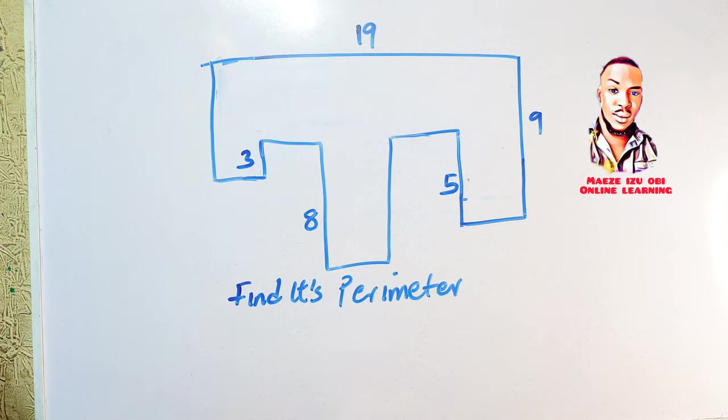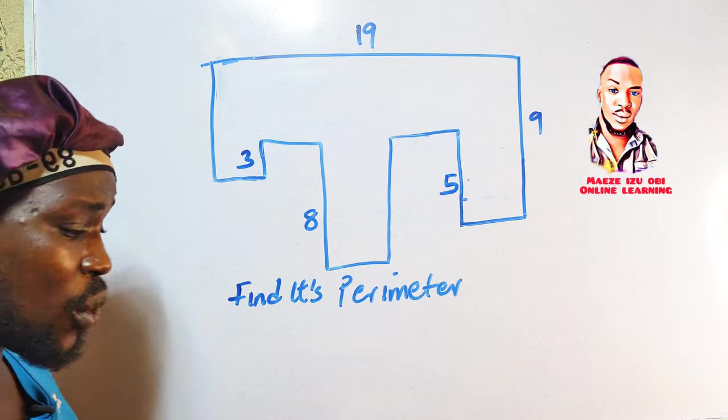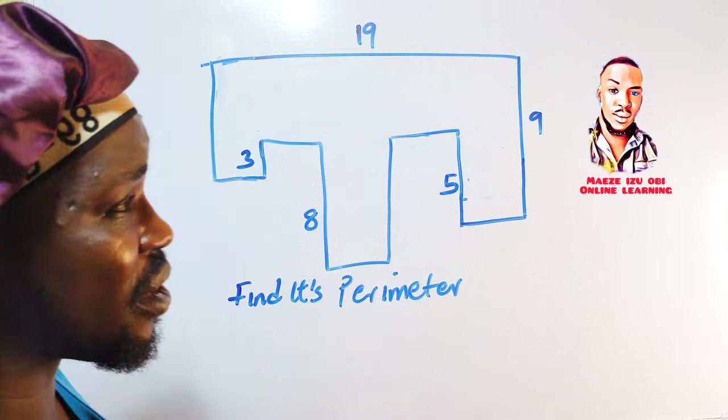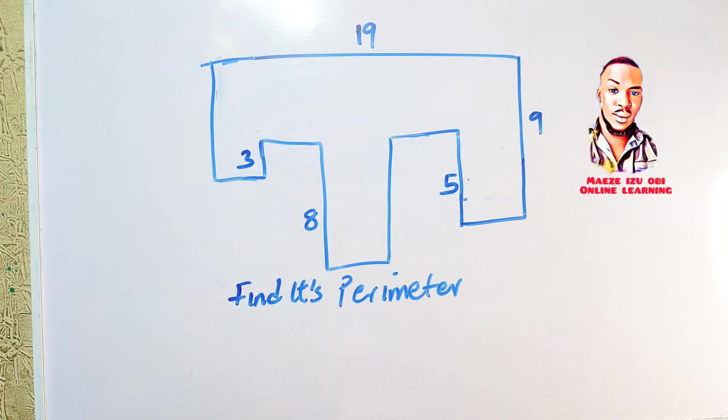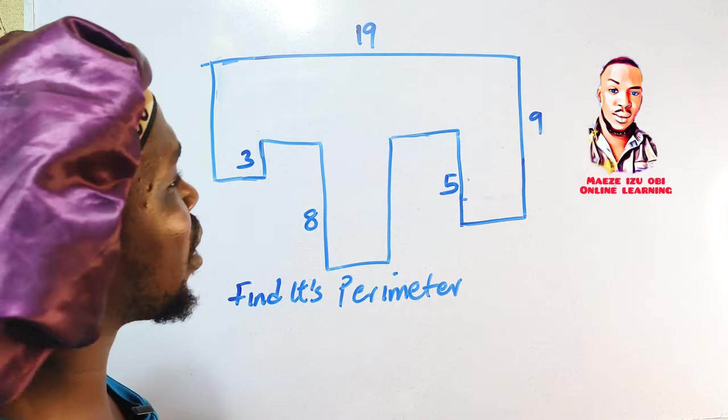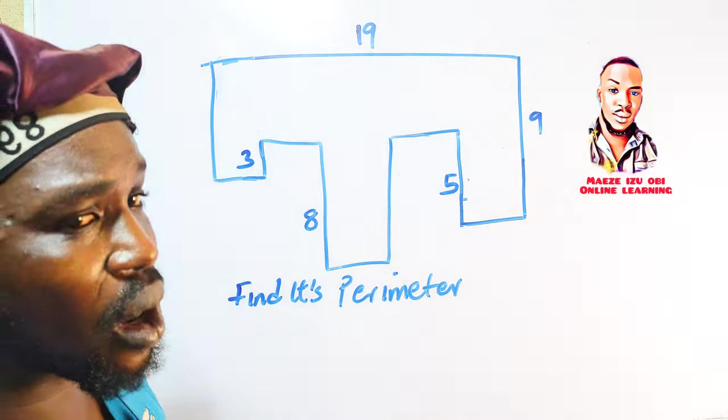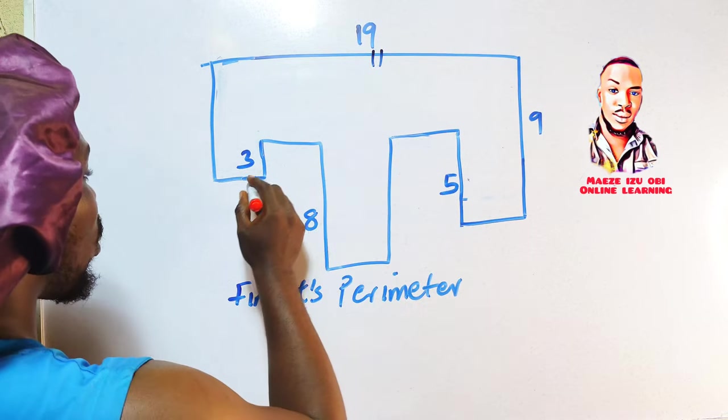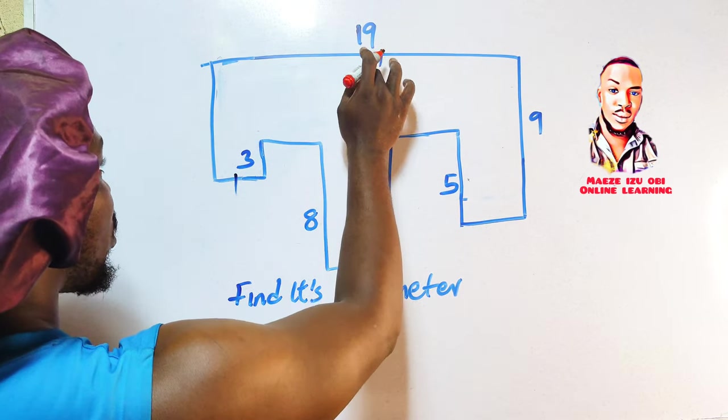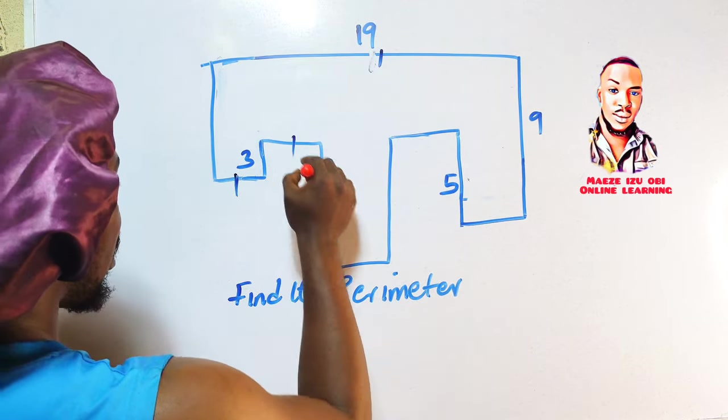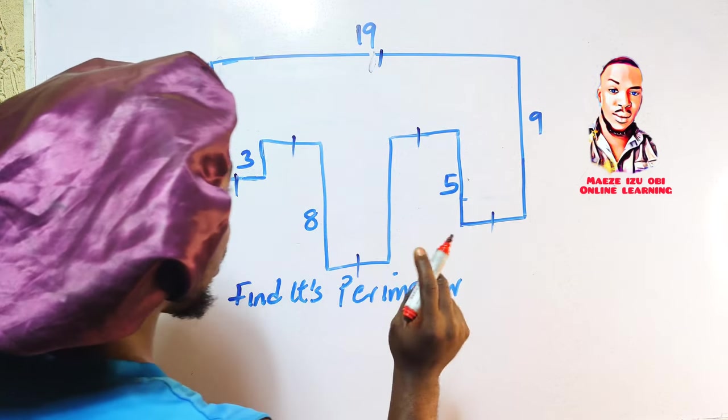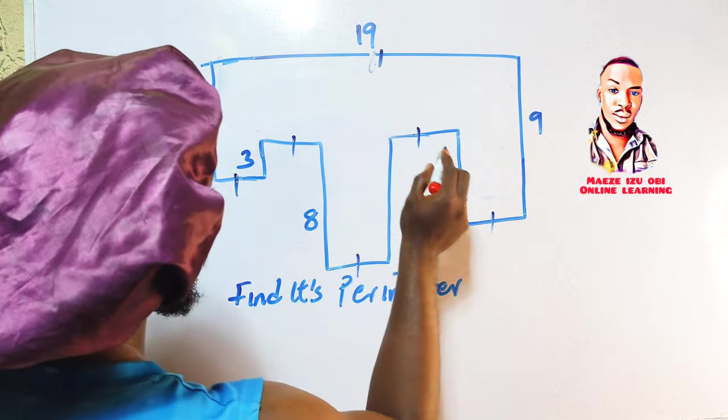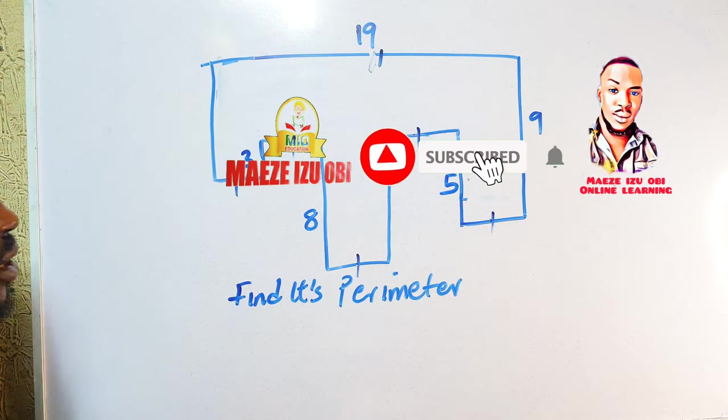This is an irregular shape we have here. We call it irregular because it does not have a name. Now one thing you need to observe about an irregular shape is there are places that are equal. For example, this 19 you are seeing is equal here, is equal here, is equal here. Now if you sum up this space, this place, this place, this place, and this place, it will give you 19.